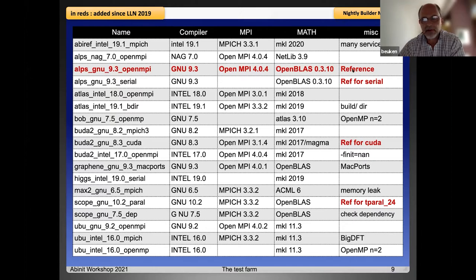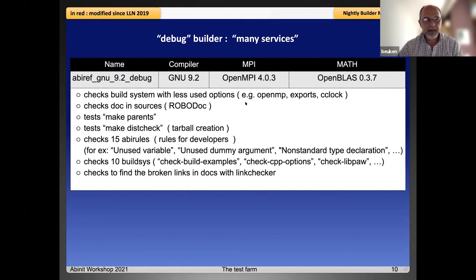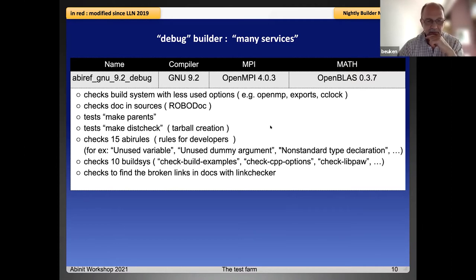For example, you have two builders checking with OpenMP. You have one builder to check the CUDA framework. You have builders checking for memory leaks and so on. This builder is now the reference builder and the results are compared with it. You can find more detail in the wiki concerning these different features of the builders.